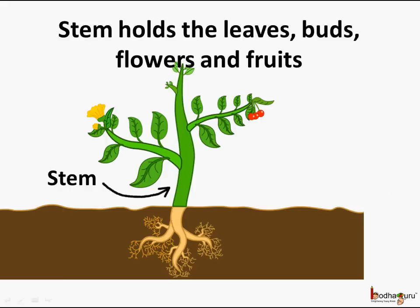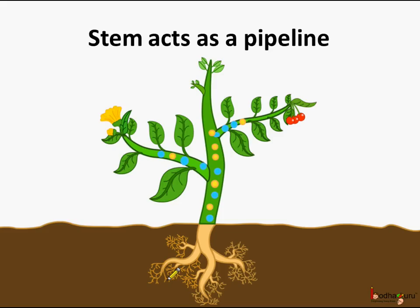The stem holds the leaves, buds, flowers and the fruits. The roots absorb the water and the minerals from the soil, and the stem acts as a pipeline and conducts the water and minerals to the other parts of the plant.